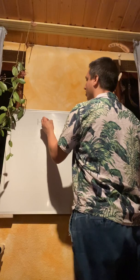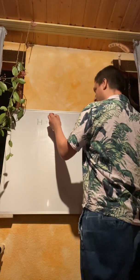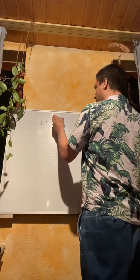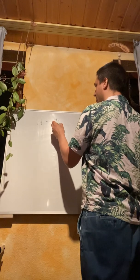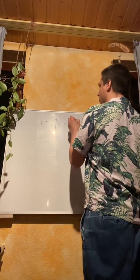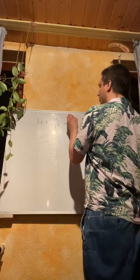So we write H equals H zero divided by T zero to the square times T to the square.